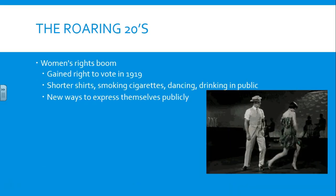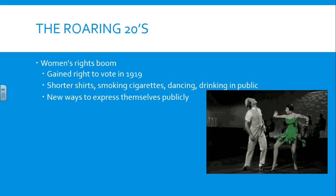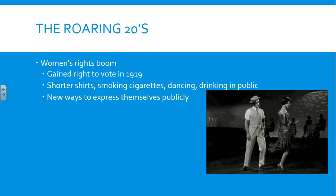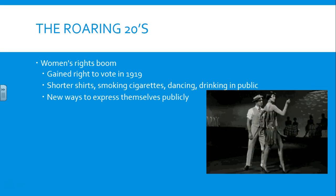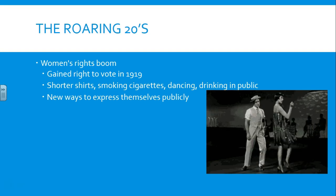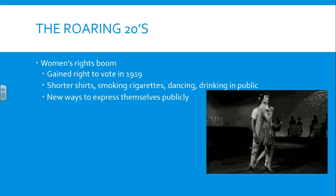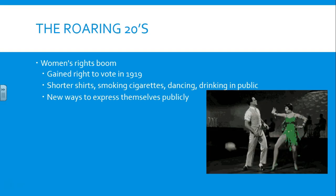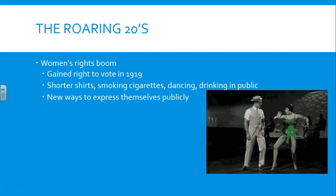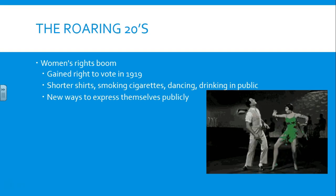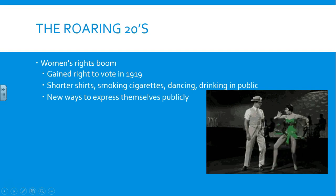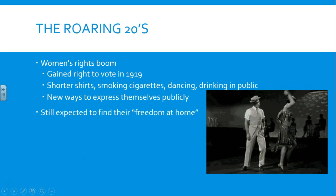Women are going to be gaining many rights in the Roaring Twenties. They're going to gain the right to vote in the United States in 1919, and they're going to be treated differently than they have been before — shorter skirts, smoking cigarettes, dancing, drinking in public. Women like this lady right here, known as a flapper, going out dancing. This whole time period is really about leisure, going out, having fun, and enjoying life. Women are finding new ways of expressing themselves publicly — no longer stuck at home cooking, cleaning, and raising the kids.